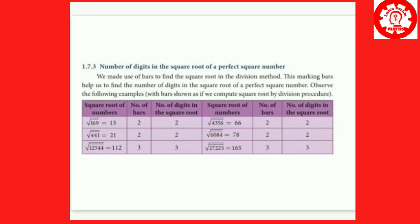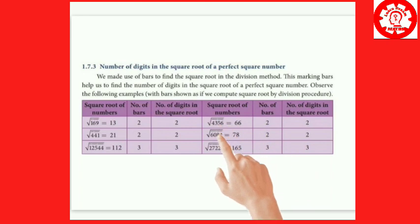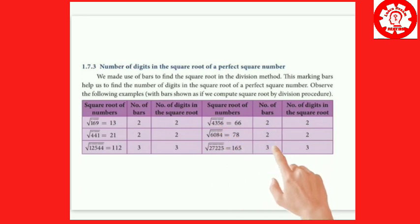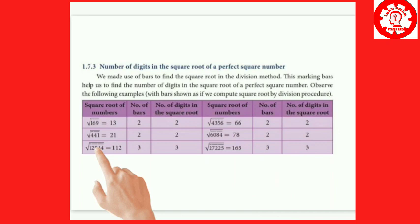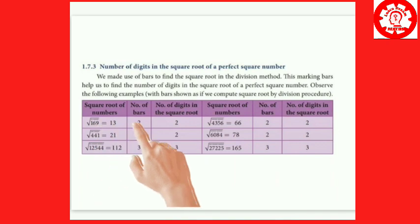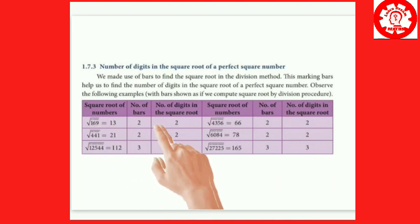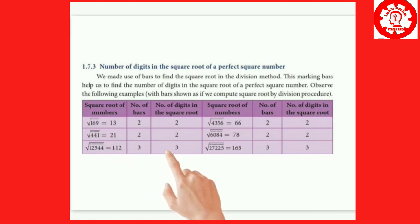So to summarize: for even digit counts of 4, 6, divide by 2 to get 2 and 3 respectively. For odd digit counts of 3 and 5: use (n+1)/2 — so 3 plus 1 is 4, answer is 2; and 5 plus 1 is 6, divided by 2 is 3.